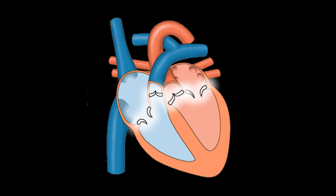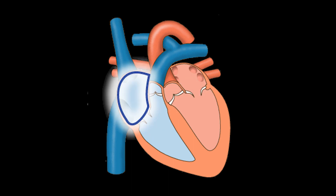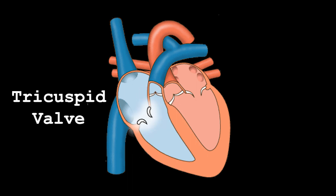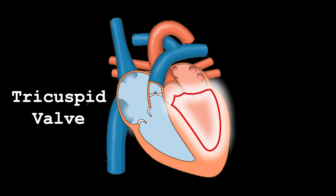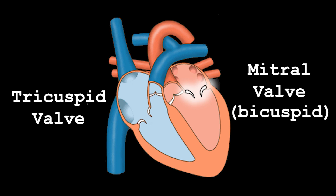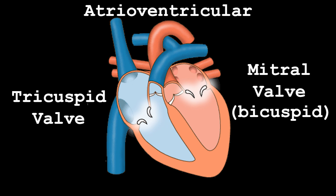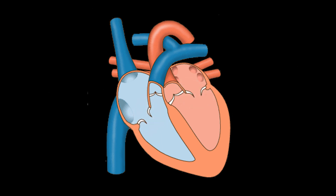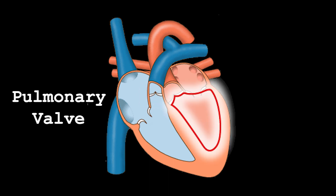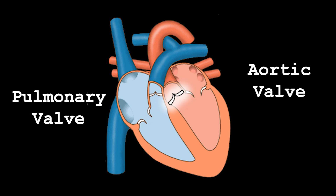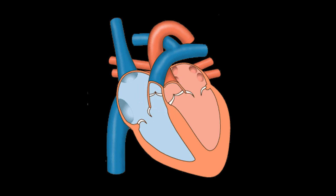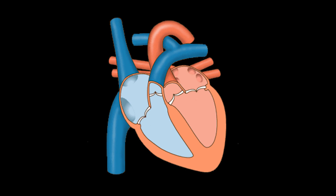The last thing we're going to look at is the four one-way valves. Blood flowing from the right atrium to the right ventricle will pass through the tricuspid valve, and blood flowing from the left atrium to the left ventricle will pass through the mitral valve, otherwise known as the bicuspid valve. Together, the tricuspid and mitral valves are known as the atrioventricular valves because they separate the atria and the ventricles. Blood leaving the right ventricle will pass through the pulmonary valve and blood leaving the left ventricle will pass through the aortic valve. Together, the pulmonary and aortic valves are also known as the semilunar valves. The closing of these valves makes the lub-dub sound of a heartbeat. When the atrioventricular valves close, it makes the first lub-dub sound, and when the semilunar valves close, it makes the second lub-dub sound.